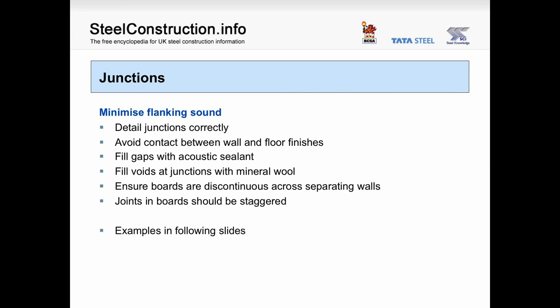Having looked at wall and floor constructions, we will now look at junctions. It is important that junctions are considered carefully in order to minimise flanking sound, so the engineer must look at junction detailing to ensure it is done correctly. The principles to follow are: avoid any contact between wall and floor finishes to prevent sound transmission; fill gaps with acoustic sealant; fill any voids in wall or floor constructions within the junction zone with mineral wool; ensure no boards are continuous across separating walls or floors; and stagger any joints in plasterboards.